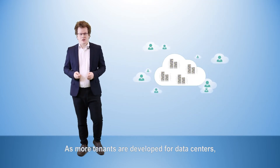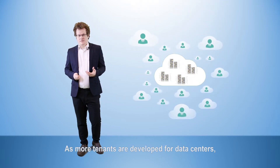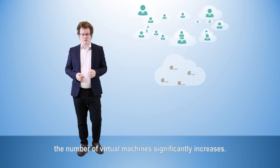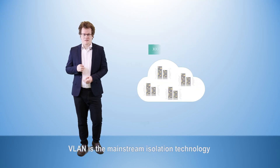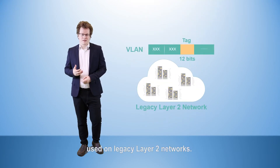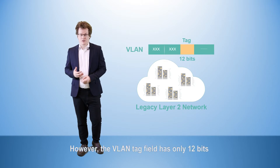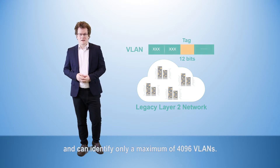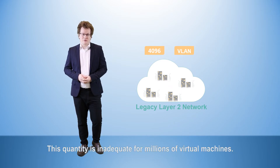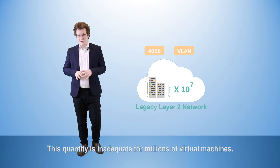As more tenants are developed for data centers, the number of virtual machines significantly increases in turn. VLAN is the mainstream isolation technology used on legacy layer 2 networks. However, the VLAN tag field has only 12 bits and can identify a maximum of just 4096 VLANs.